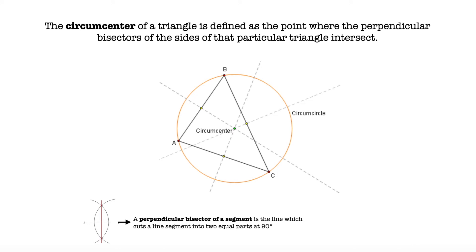The circumcenter of a triangle is the point where the perpendicular bisectors of the segments of that triangle intersect. Remember that the perpendicular bisector of a segment is the line that divides a segment into two equal parts at 90 degrees.